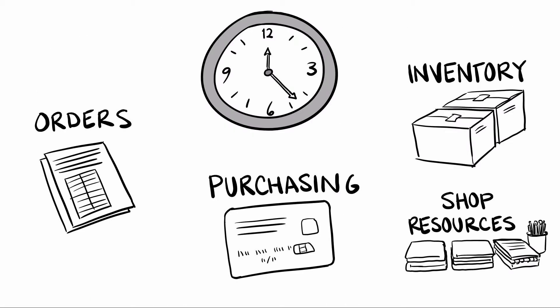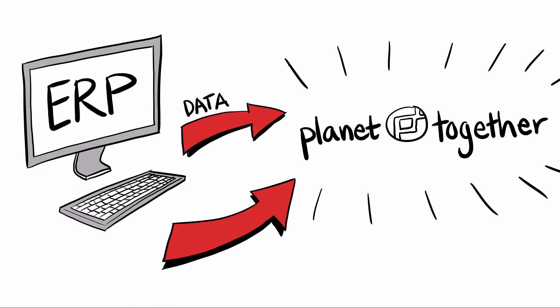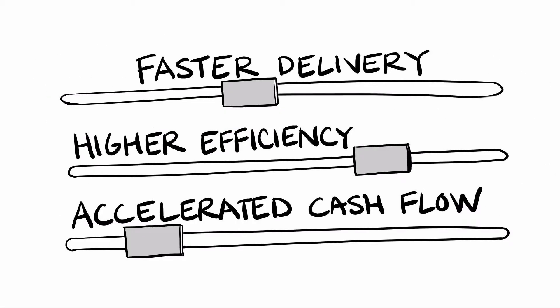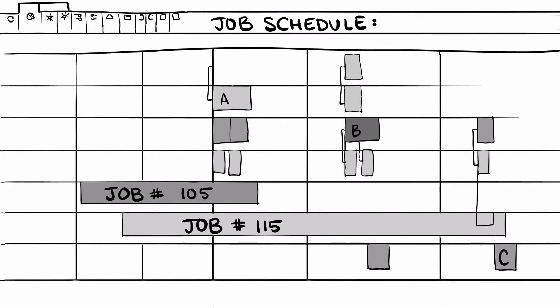Then, throughout the day, data flow from your ERP system into Planet Together. You simply choose how you want to optimize, and Planet Together takes care of the rest, updating your production schedule automatically.